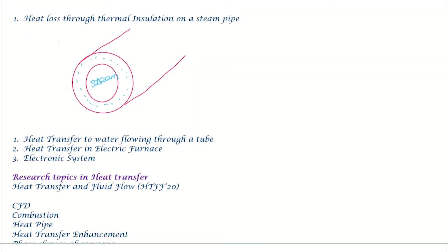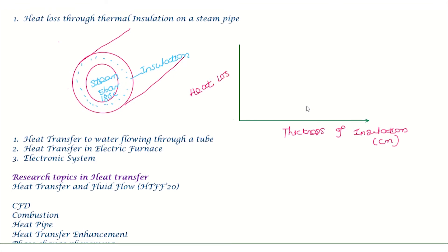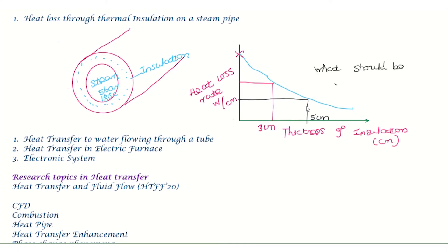Another example is heat loss through an insulated steam pipe. Steam is generated at a central location and distributed through pipes with various branches. Pipe insulation — typically fiberglass — is used to maintain temperature and quality of the steam. The thickness of insulation is calculated using the concept of critical radius of insulation. For example, a steam pipe at 5 bar and 180 degrees Celsius: without insulation the heat transfer rate is high; with 3 cm or 5 cm insulation, the heat transfer rate is reduced. This is a conduction-convection concept used to design insulation thickness.